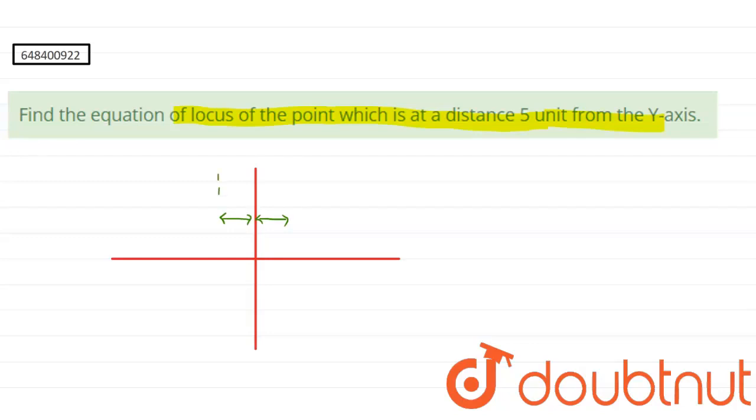And this line, which is parallel to y-axis, x is equal to minus 5. And this line again, which is parallel to y-axis, x is equal to plus 5.